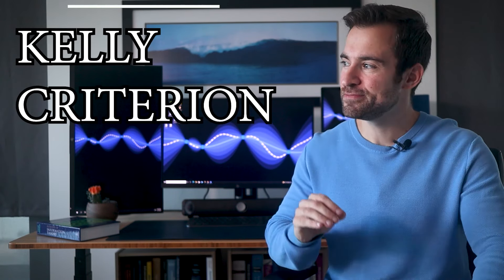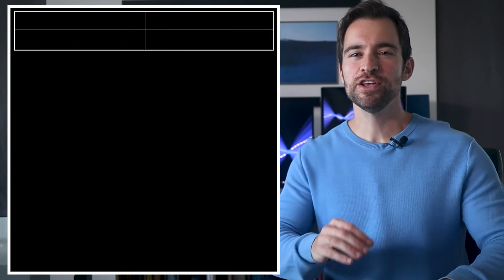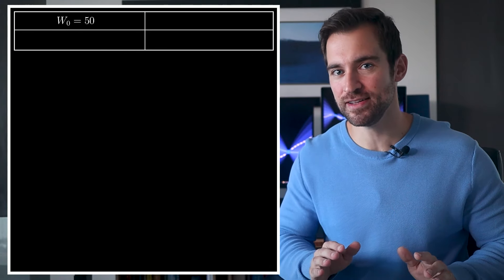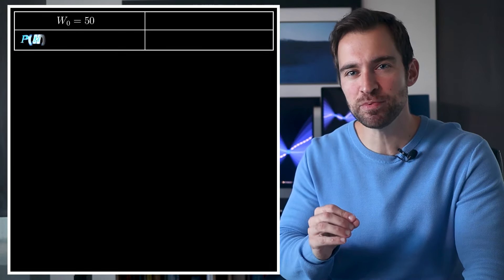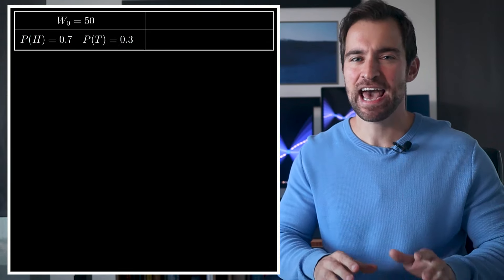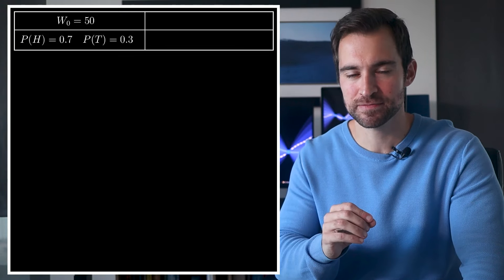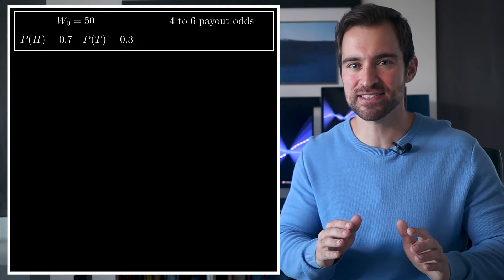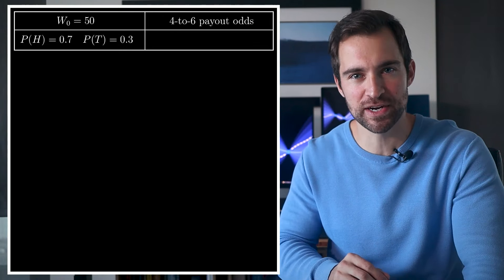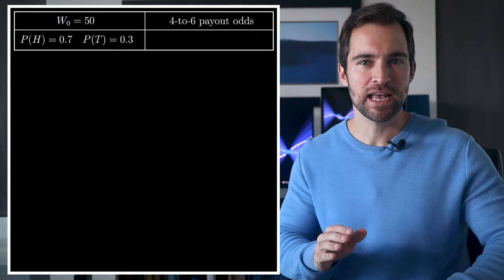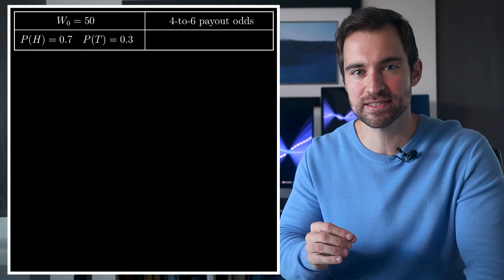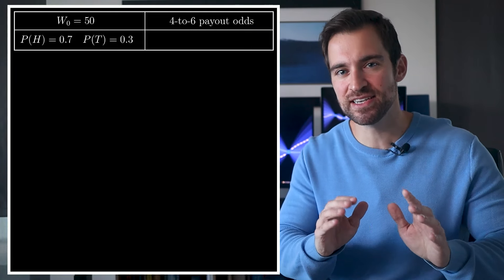To understand it, we need to play a game. You start with $50 and will flip an imbalanced coin repeatedly. The coin has a 70% chance of landing heads and a 30% chance of tails. On each flip, you are given four to six payout odds, heads to tails, and a choice of how much to wager. That means if you wager $6, then you'll profit $4 if it comes up heads. Otherwise, you'll lose $6.